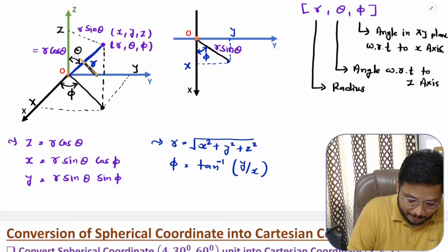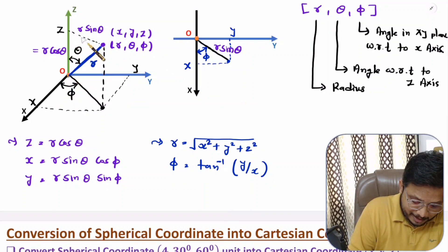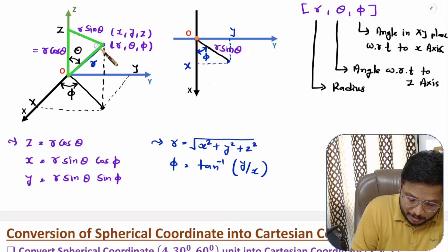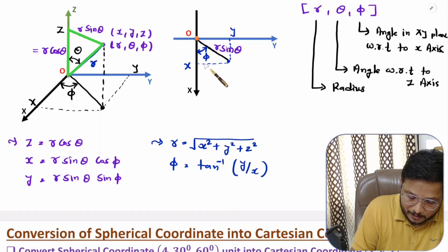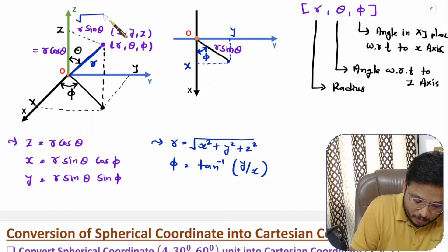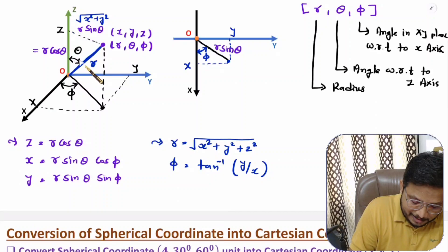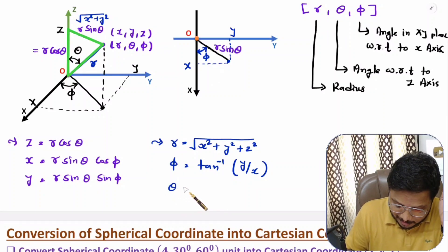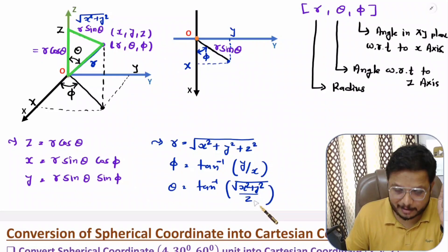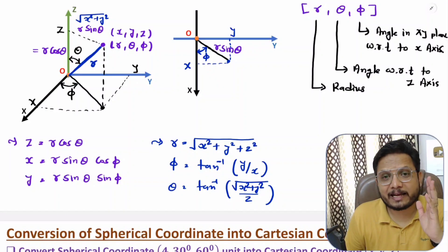Now if you want angle theta, you look at the vertical triangle. The horizontal dimension is R sin theta, which practically equals the square root of X squared plus Y squared. The vertical dimension is Z. In this triangle the angle is theta, so tan theta equals opposite over adjacent, which is √(X²+Y²) divided by Z. Therefore theta equals tan⁻¹(√(X²+Y²) / Z). That is how we can get R, theta, and phi from X, Y, and Z.